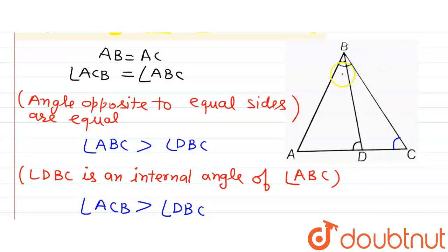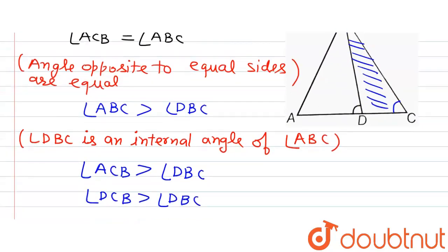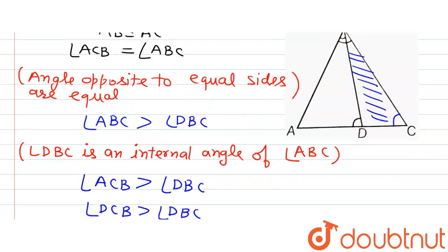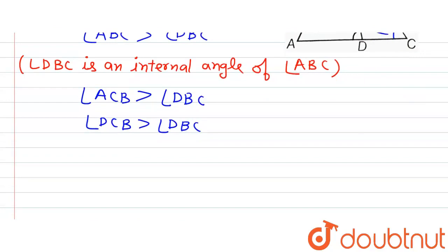Now let's observe triangle BDC. In triangle BDC, what we have is angle DCB is greater than angle DBC. Therefore the side opposite to angle DCB, that is BD, will be greater than the side opposite to angle DBC, that is DC. So we will have BD greater than DC.